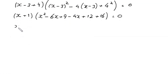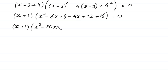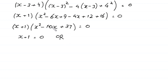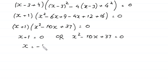Simplifying the bracket: combining like terms gives x² minus 10x plus 37. So we have (x plus 1)(x² minus 10x plus 37) = 0. From here, either x plus 1 = 0, giving x = negative 1 — the first value of x — or x² minus 10x plus 37 = 0.